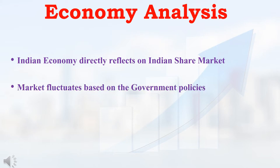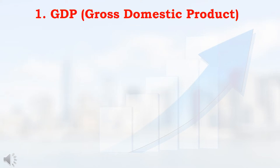During the budget session, why the market is fluctuating — all the investors will watch the government policies. Based on those government policies, what industries will get benefit, the investors will analyze and invest in that type of industries. During the budget session, government will give many announcements, and based on those announcements, the market will also fluctuate. For doing economy analysis, 5 parameters are very important.